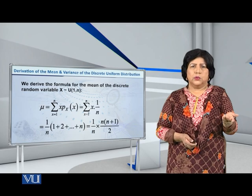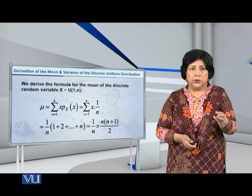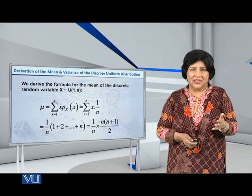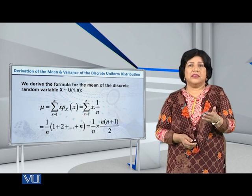This you already know from school level. So therefore mu, the mean, is equal to 1 over n into n into n plus 1 over 2.